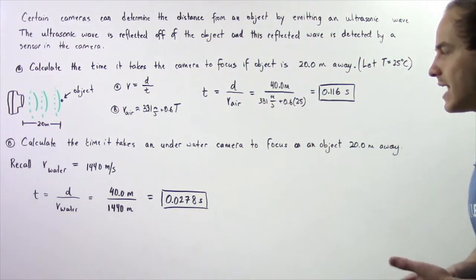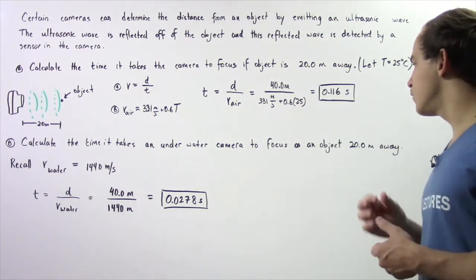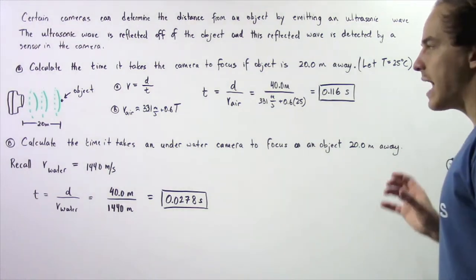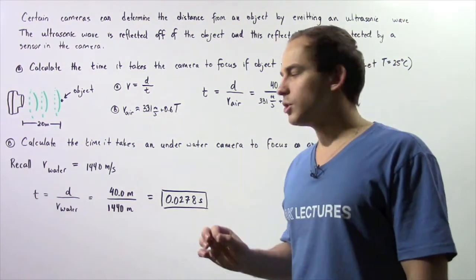Now in part B, calculate the time it takes an underwater camera to focus on the object that is 20 meters away. We are assuming the camera and the object are underwater.